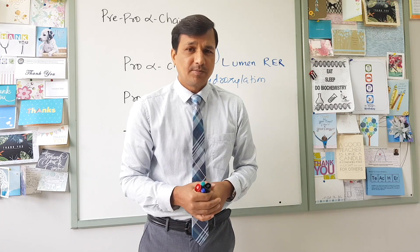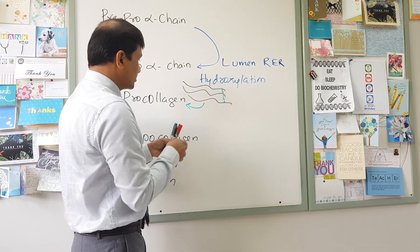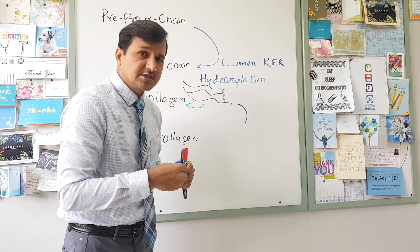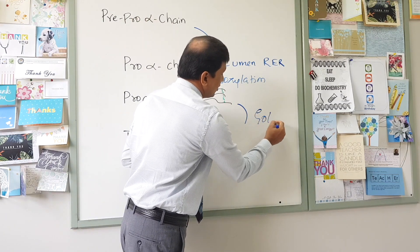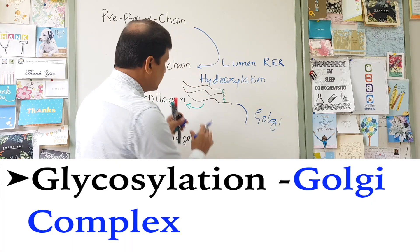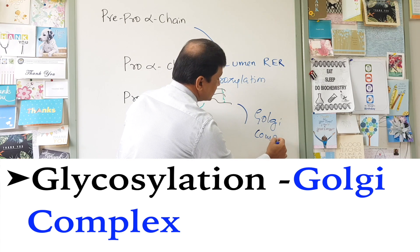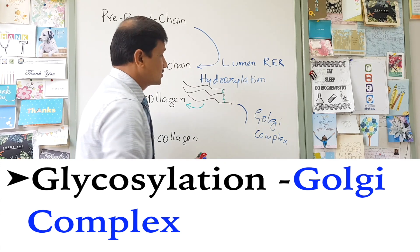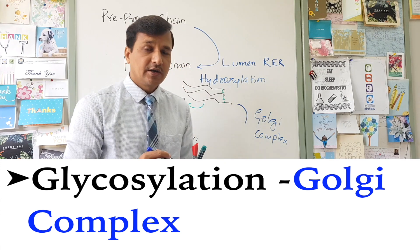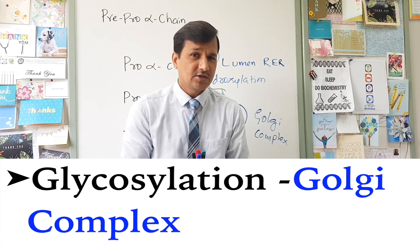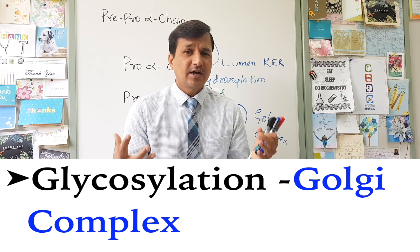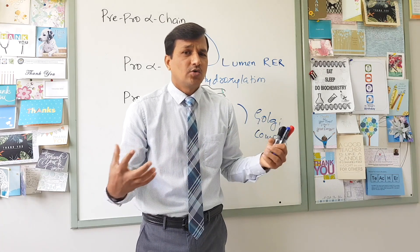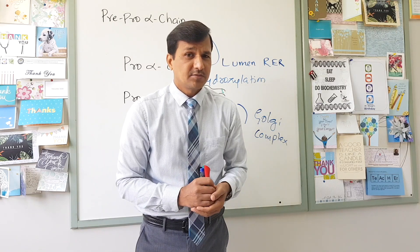Pro-collagen moves into the Golgi complex, entering at the cis-Golgi. As it transits through the medial Golgi into the trans-Golgi, further glycosylation occurs on the pro-collagen molecule. Some of the lysine and hydroxylysine residues undergo glycosylation with addition of glucose and galactose, though the exact purpose of this glycosylation on pro-collagen is not entirely clear.